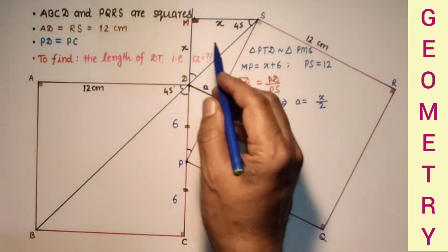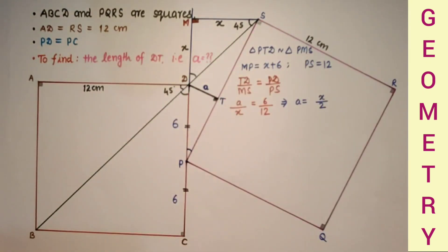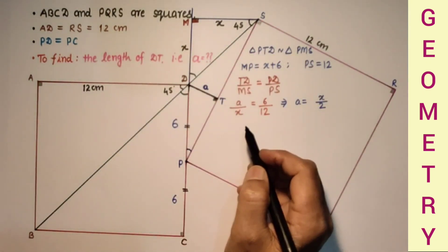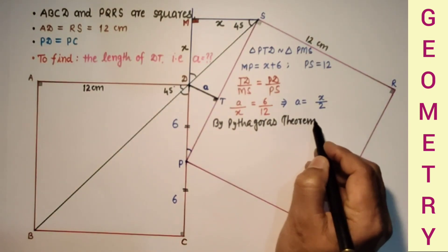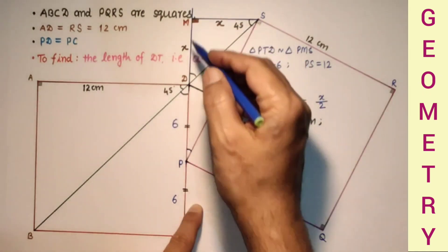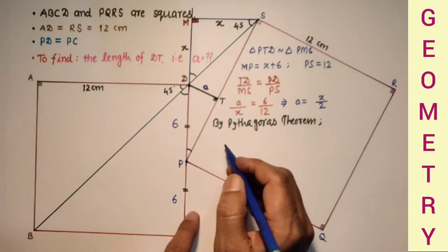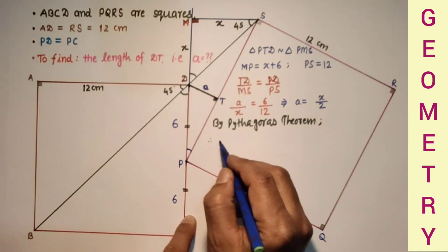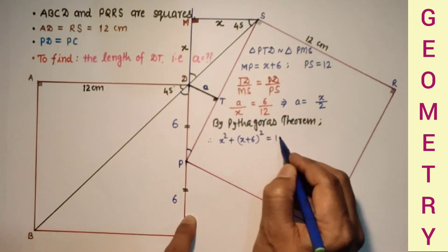Now to find X we will use Pythagoras theorem in this triangle. By Pythagoras theorem, SP square is equal to MS square plus MP square. PS square is 12, so we can say that X square plus (X plus 6) whole square is equal to 12 square.